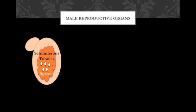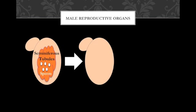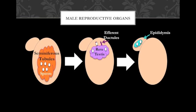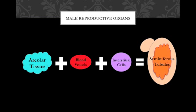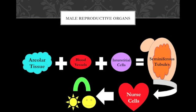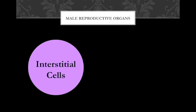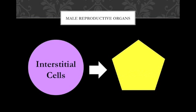Sperm produced in the seminiferous tubules exits the tubules and passes through a maze of passageways known as the rete testis and efferent ductules, in order to get to the epididymis, which is the beginning of the male reproductive tract. Vascular tissue, blood vessels, and large interstitial cells fill the gaps between the tubules. Each seminiferous tubule also contains nurse cells which help nourish developing sperm cells. The interstitial cells are responsible for producing male sex hormones known as androgens, the most important being testosterone.